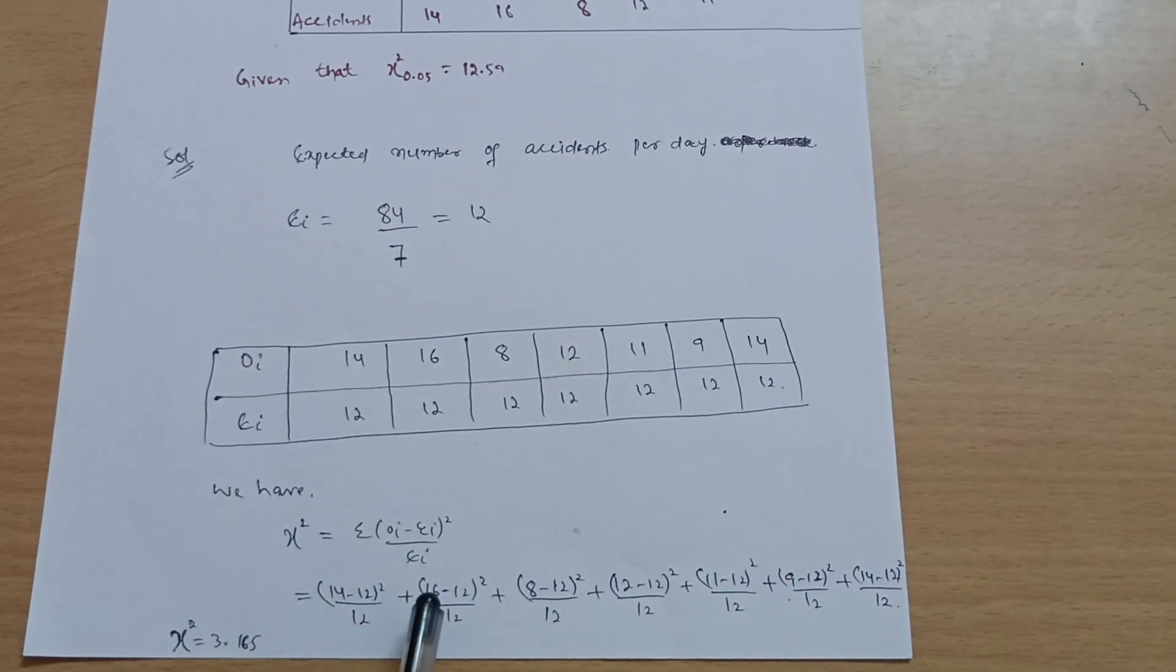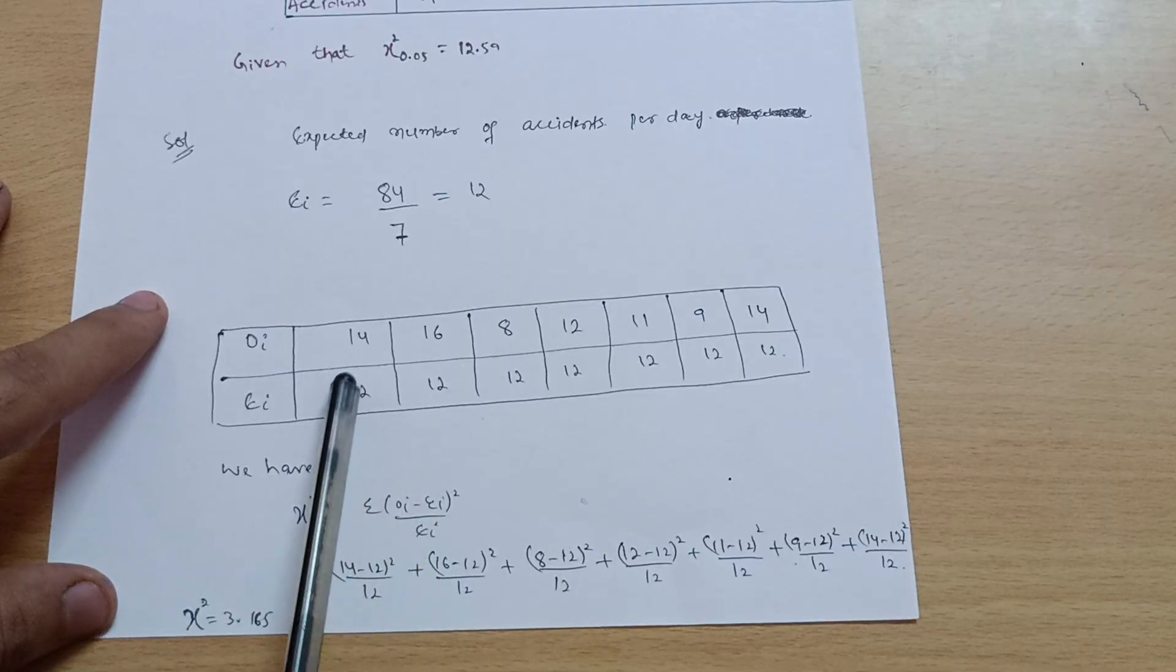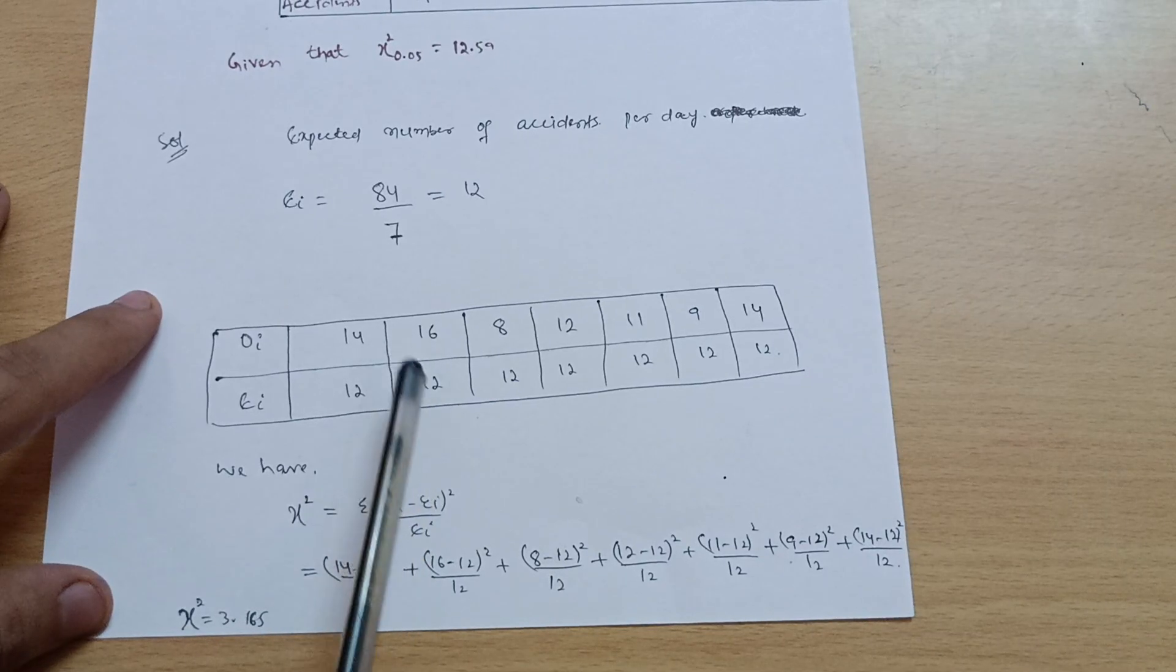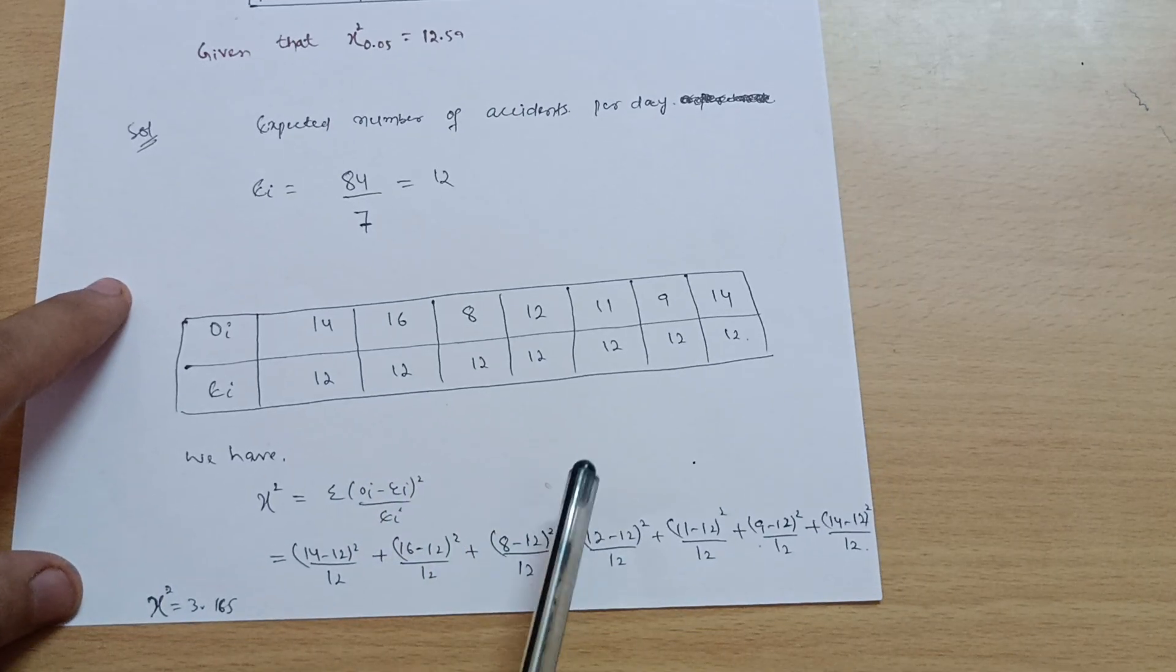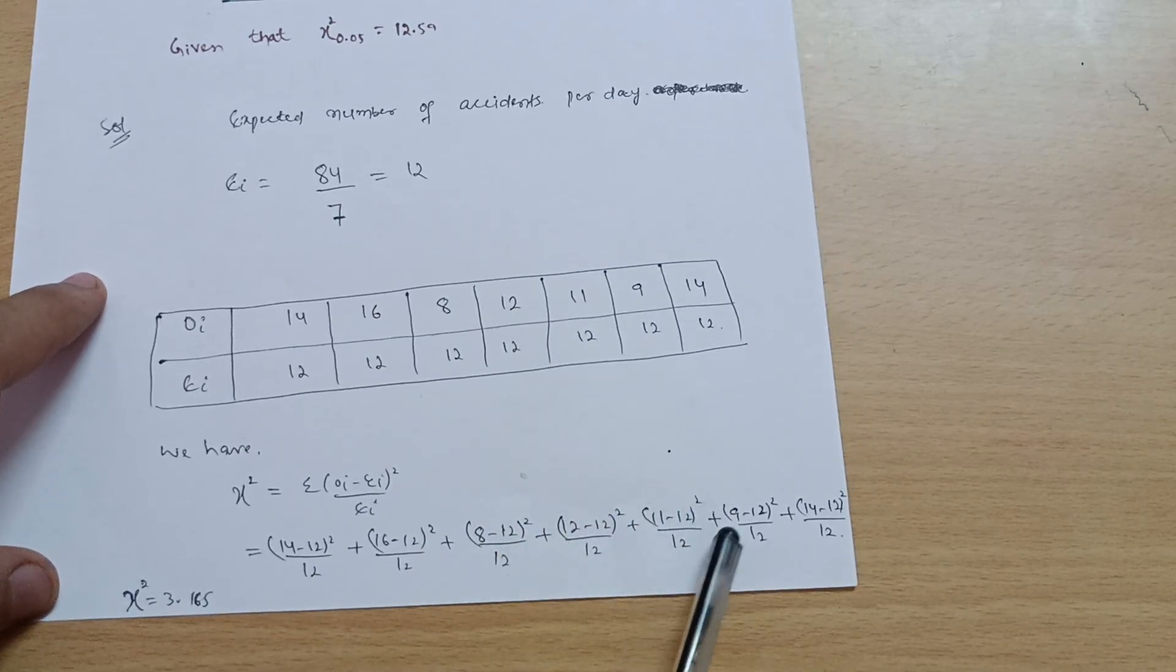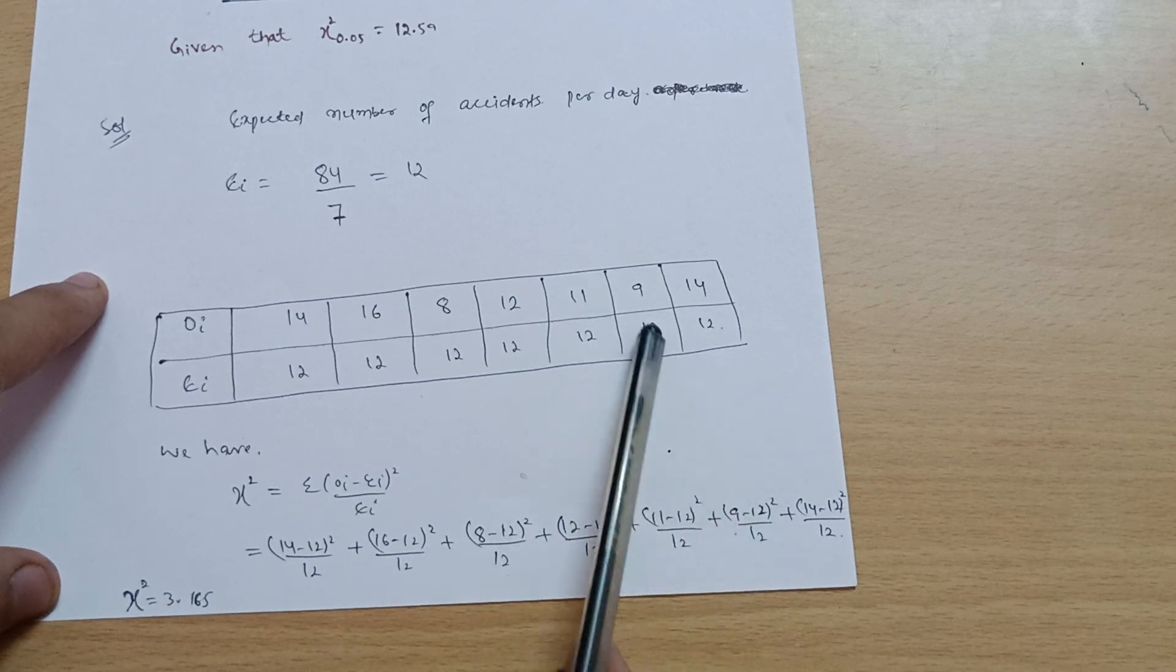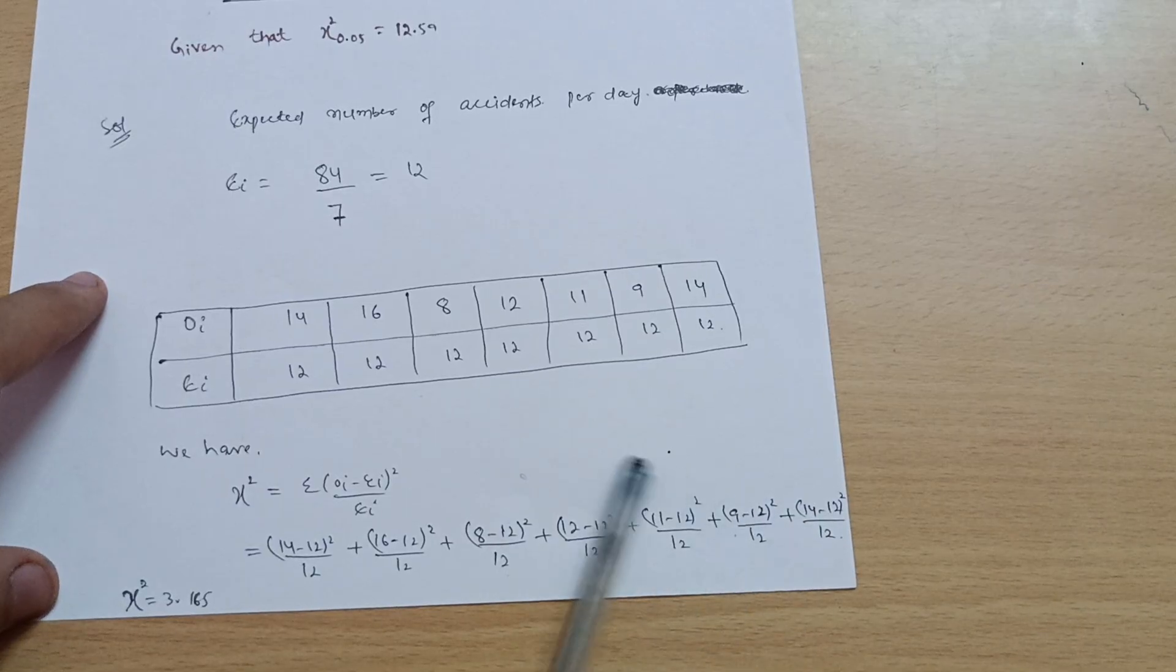So (14 - 12)² / 12 + (16 - 12)² / 12 + (8 - 12)² / 12 + (12 - 12)² / 12 + (11 - 12)² / 12 + (9 - 12)² / 12 + (14 - 12)² / 12. When you calculate this value...